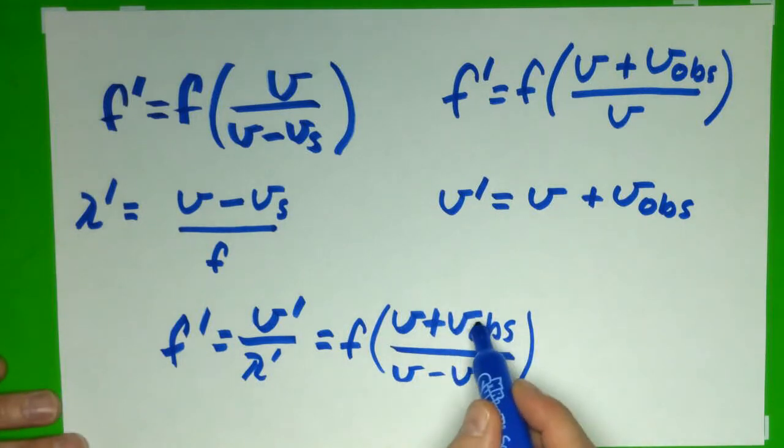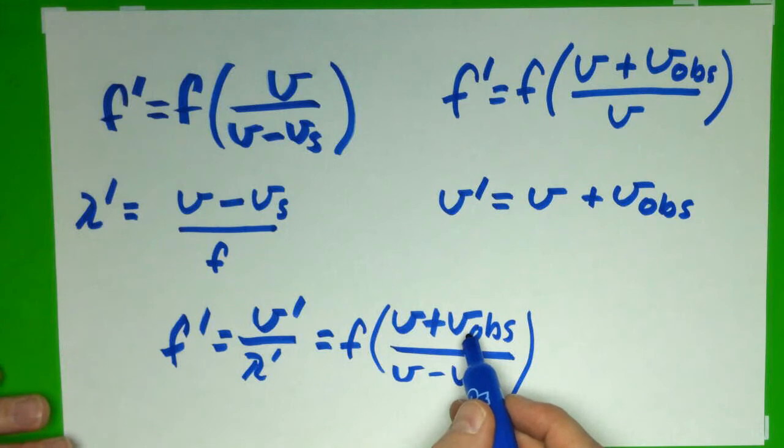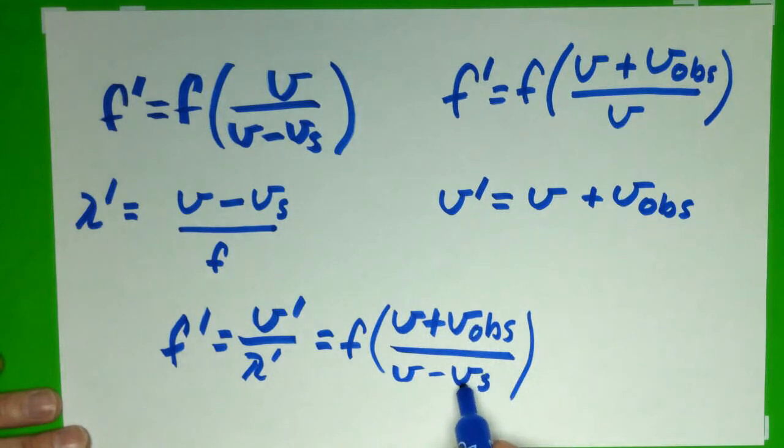So our conventions about whether this and this are positive still hold. If the observer is approaching the source, whether or not the source is approaching the observer, then this is positive. Otherwise, this is negative. And same thing here. If the source is approaching the observer, whether or not the observer is approaching the source, this is positive.